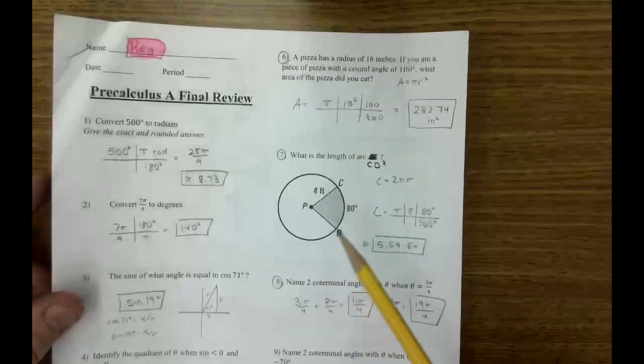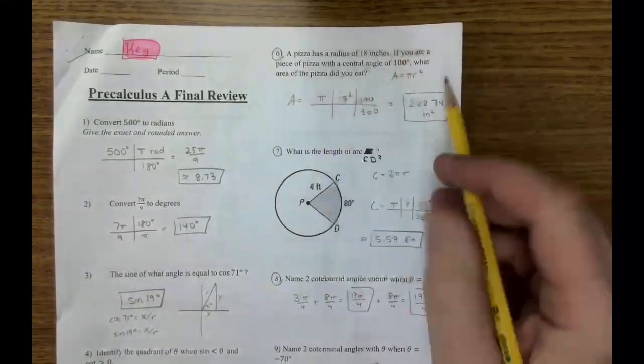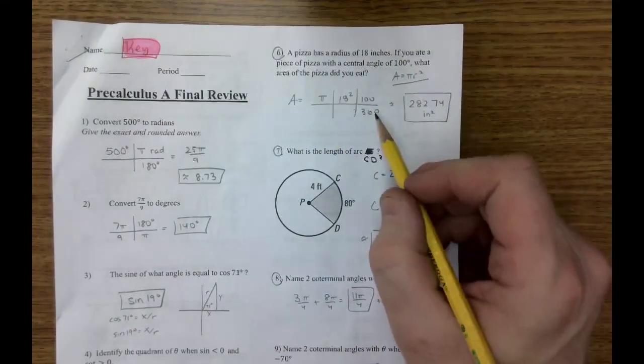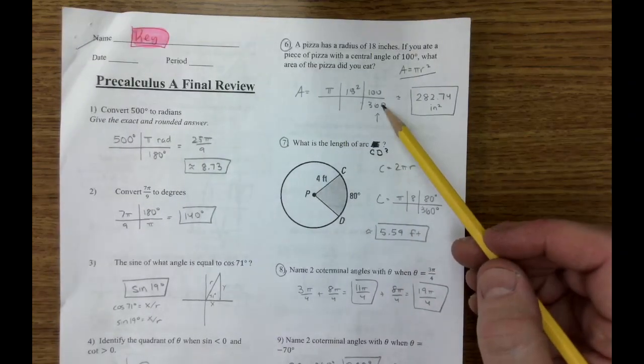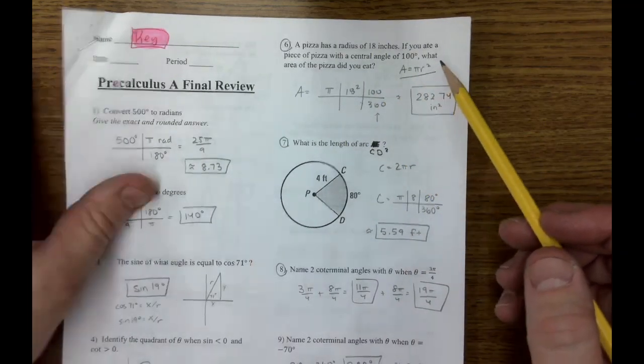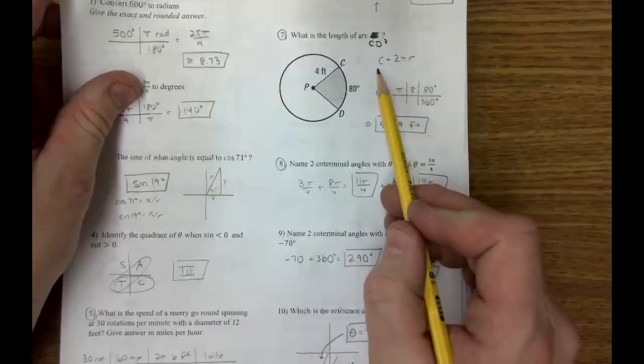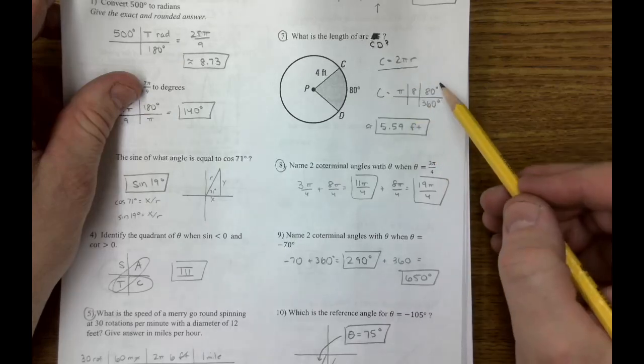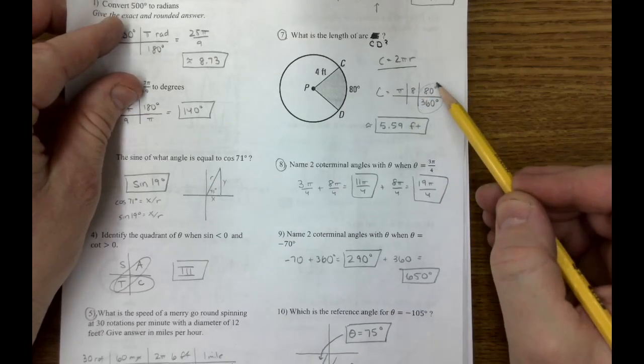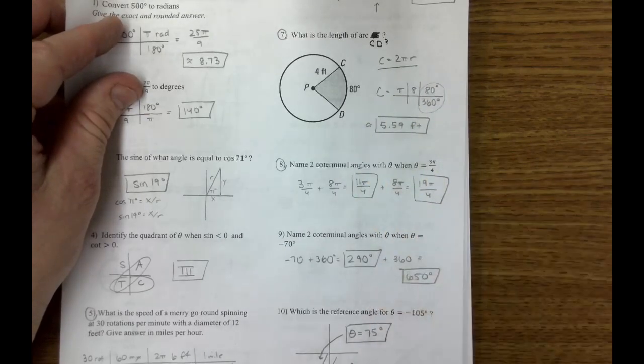On number six, the formula for a circle is area equals pi r squared. However, we only have part of a circle. We have 100 degrees out of 360, so make sure you put that conversion factor in here. Same thing on number seven. Here's our formula for circumference, and we're going to put in here this fraction that says I only want 80 degrees out of the 360.